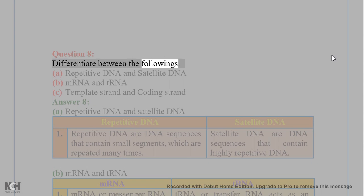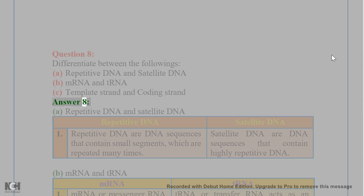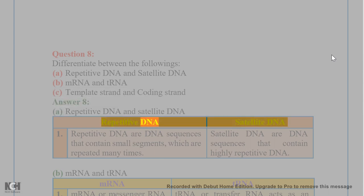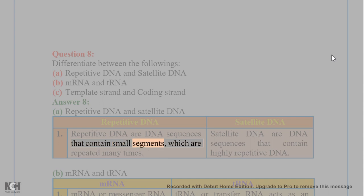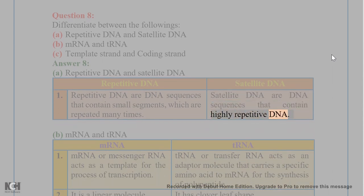Question 8. Differentiate between the following: A. Repetitive DNA and Satellite DNA. Repetitive DNA are DNA sequences that contain small segments which are repeated many times. Satellite DNA are DNA sequences that contain highly repetitive DNA.